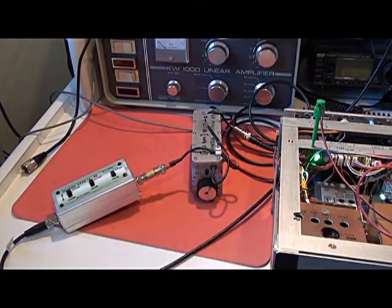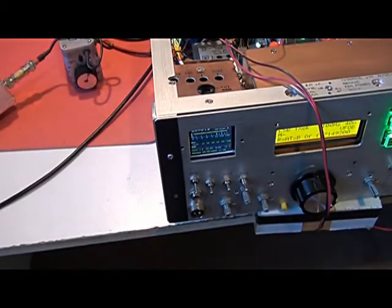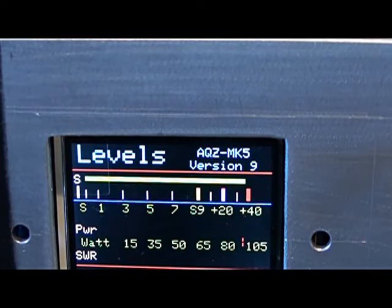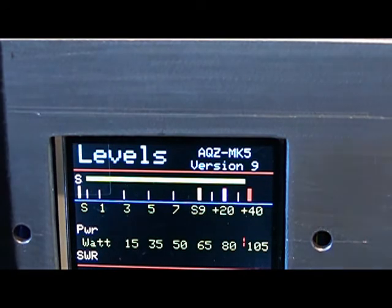So there's the HP attenuator plus the other one and down here we have the S meter. So that's showing S9 plus 40 and we're reading 7.77 volts there.